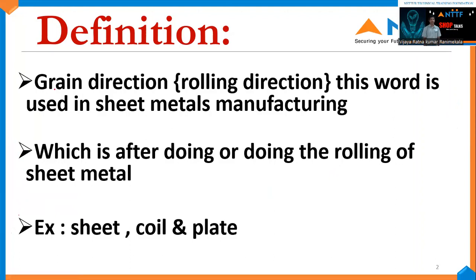Grain Direction is also called Rolling Direction. Mainly this term is used in manufacturing of sheet metal components, coils, plates, and in some cases iron parts too. The direction produced during and after the rolling process is called Grain Direction.